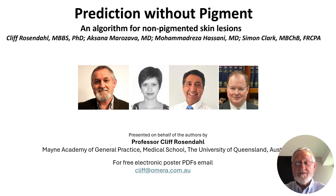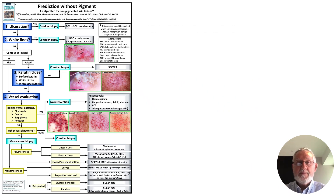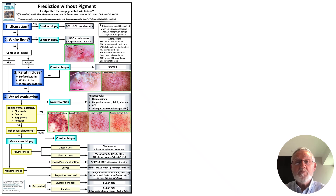My name is Cliff Rosendale and welcome to this presentation on prediction without pigment. This method is designed as a stepwise method to lead to a decision with respect to biopsy and also a limited differential diagnosis with respect to what the lesion actually is.